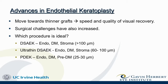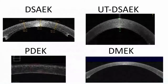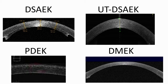PDEK is Descemet's membrane plus a little pre-Descemet's membrane — maybe a little easier to manipulate, but smaller. DMEK is just Descemet's membrane and endothelial cells. And Dr. Colby is really leading the way on DWEK — Descemet's stripping without endothelial keratoplasty. This picture of the DSEK was one of our earlier grafts — that tissue thickness wouldn't even be acceptable in this day and age.